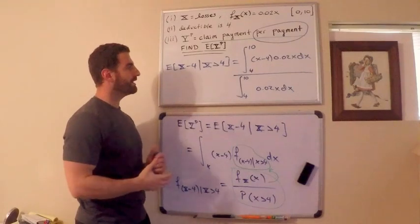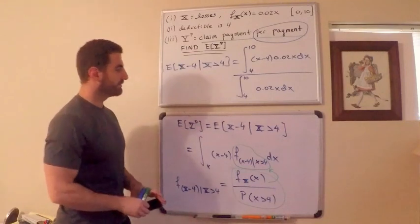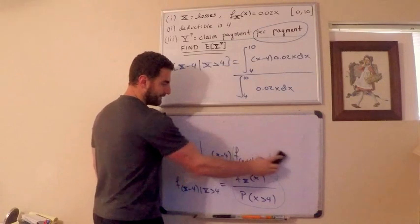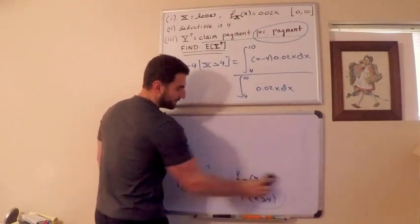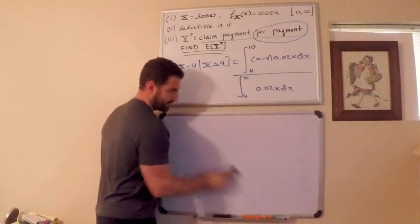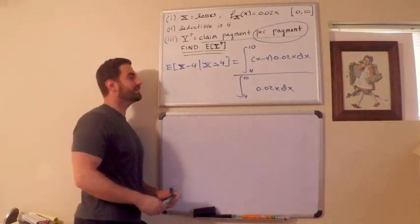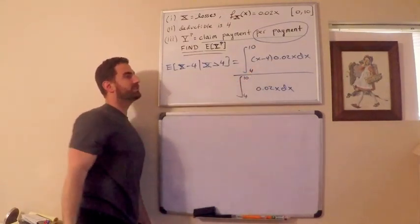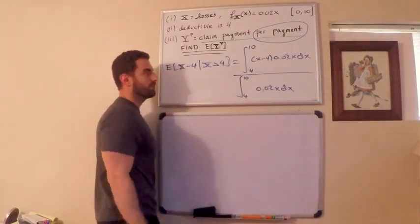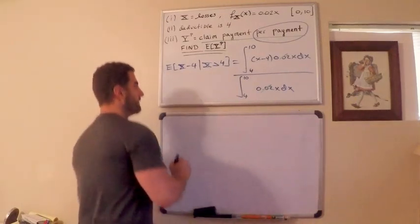Wouldn't it be nice if I could cancel the 4 to 10s, the integrals? Unfortunately, we cannot, just due to properties of integration. So that sucks. My life would be easier if I could, but I can't. From here on out, this is basically just Calc 1 business. There is one nice thing I can do. I can pull the 0.02 out, factor out the 0.02 and just get rid of it. So the 0.02 is gone.